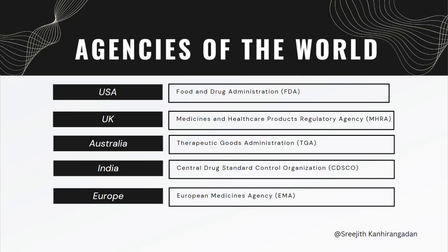Before we go into the definitions, I want to quickly show you a list of various regulatory agencies of the world. Every country has regulatory agencies; I just picked a few so that you can familiarize yourself with them. USA has the Food and Drug Administration, or FDA. UK has the Medicines and Healthcare Products Regulatory Agency. Australia has the Therapeutic Goods Administration. India has the Central Drug Standard Control Organization. And Europe has the European Medicines Agency.